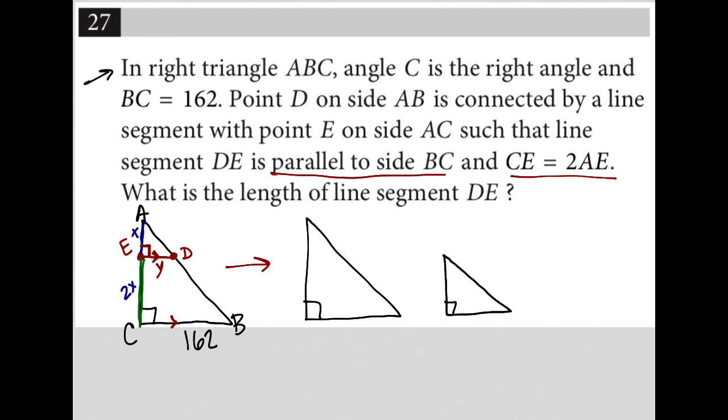So I have my right angles. I have A, E, D for the small right triangle. I know this is side Y and this is side X. I have A, C, B for the large right triangle. I know this is 162.